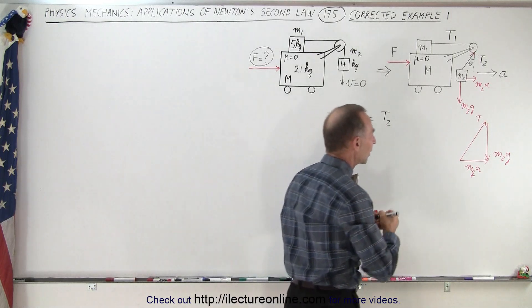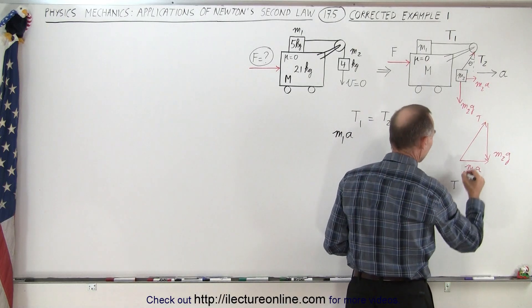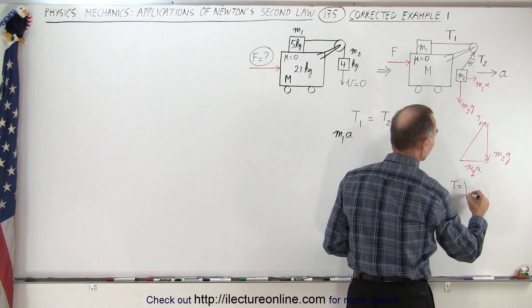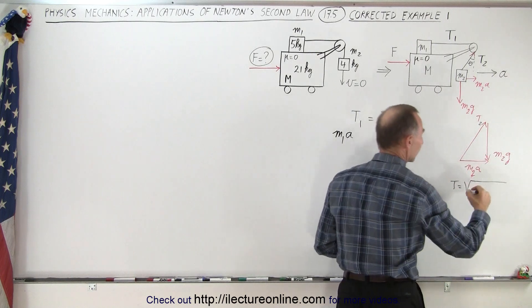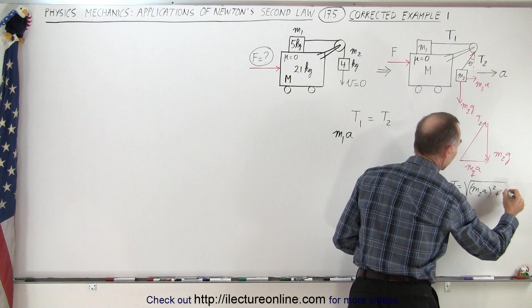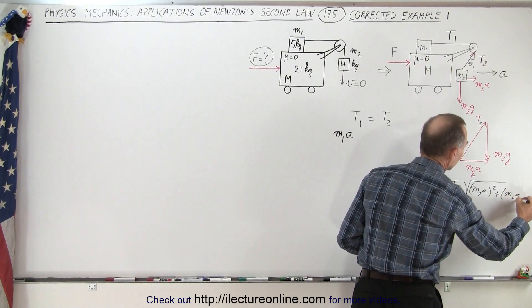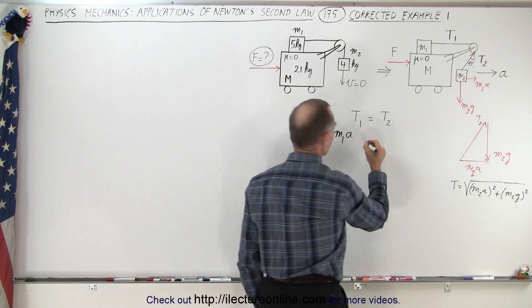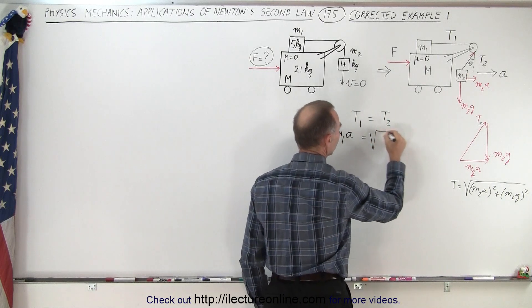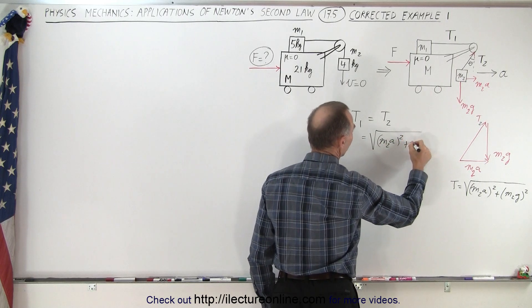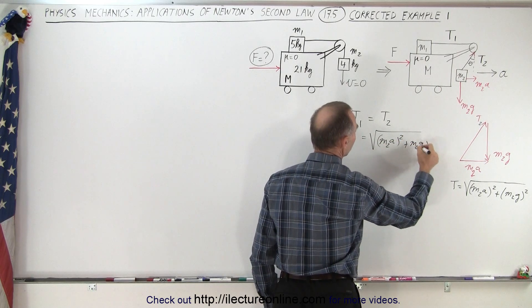If that's true, then we can say that the tension t2, which is the hypotenuse, is equal to the square root of the sum of the squares of these. So this would be m2a quantity squared plus m2g quantity squared. And that can go in here, so this can then be written as the square root of m2a squared plus m2g squared.